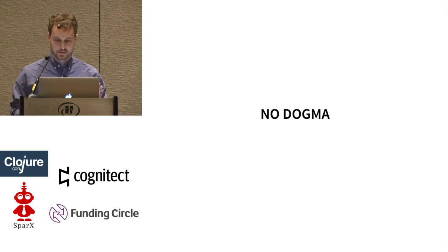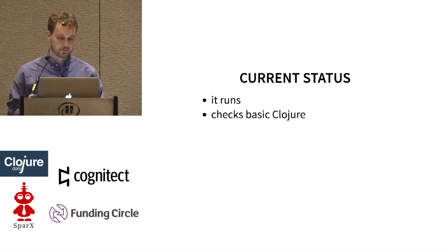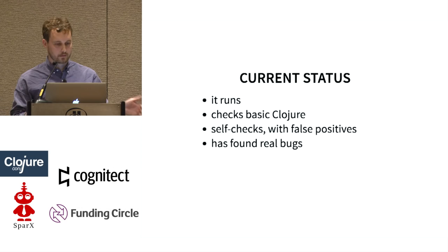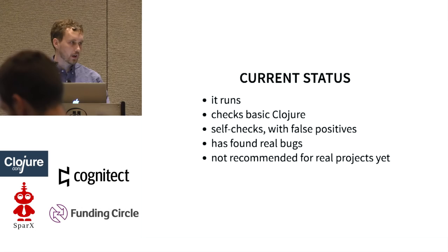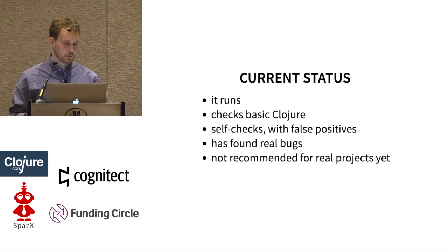The current status: it runs. It checks basic Clojure source code. It has unit tests, and I've written hundreds of little fake namespace definitions. It self-checks itself. It has some false positives, but it has caught real bugs in itself. It's not recommended for real projects yet — you can download it, run it, poke around at the REPL, but there's still a lot of missing convenient stuff, and there are some specs it'll check and some it won't.